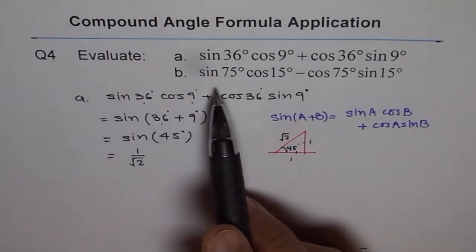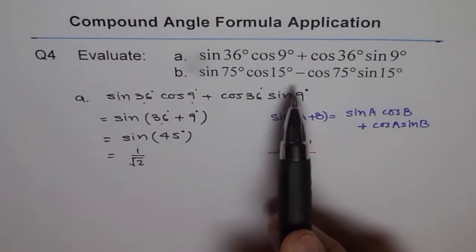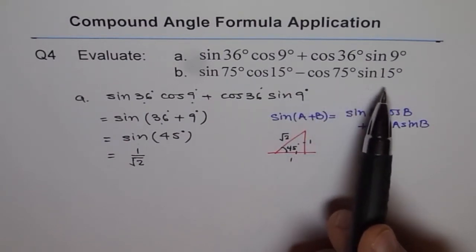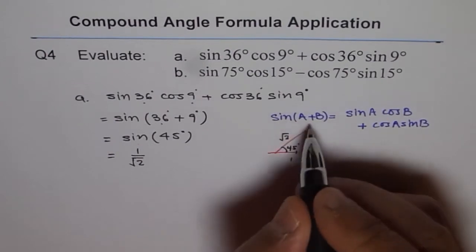Similarly, I would like you to do the second one, which is sin 75° cos 15° minus cos 75° sin 15°. Now here, since this is minus, then for minus, I hope you remember,